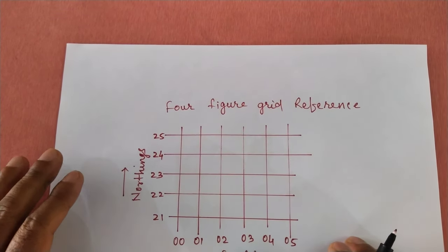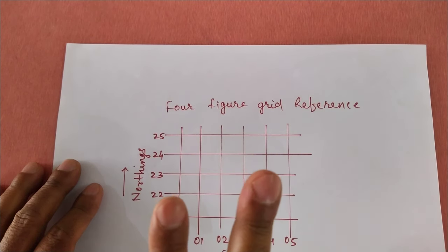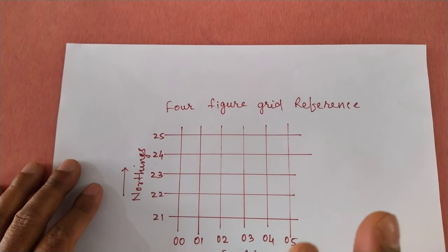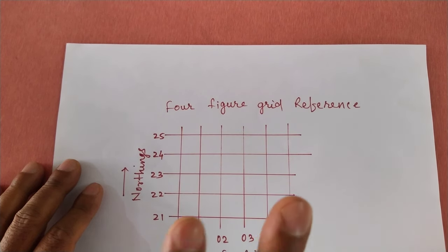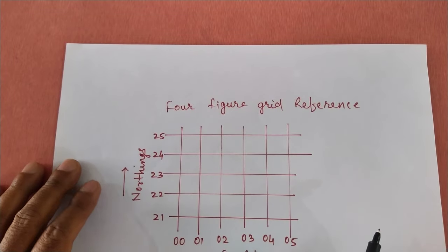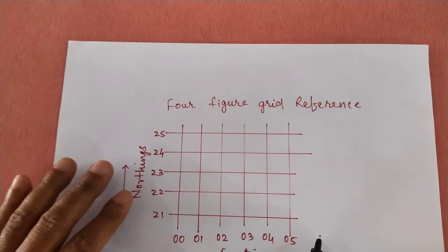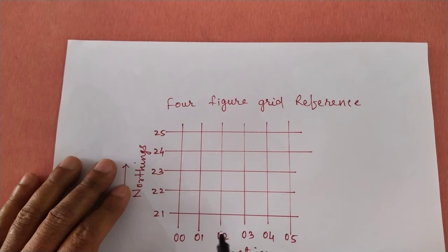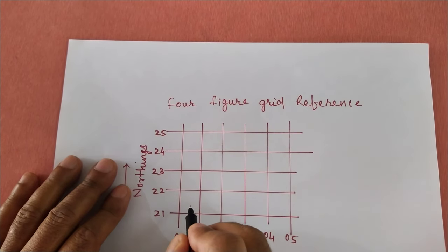In the four-figure grid reference, the first two digits will be of Easting and the last two digits will be of Northing. Suppose we are given a location to find out the four-figure grid reference — let's take one example.